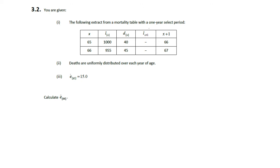We're given a one-year select period, so that means if we select age 65, if we add one year to that, that's just going to be 66.